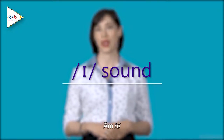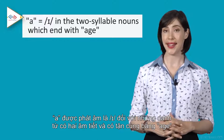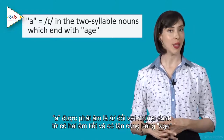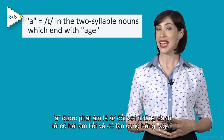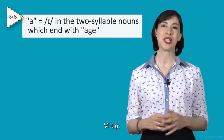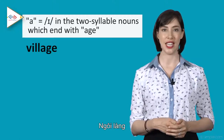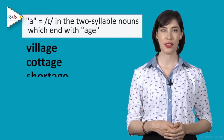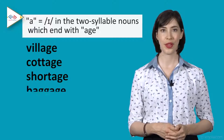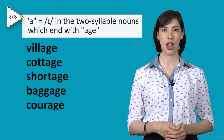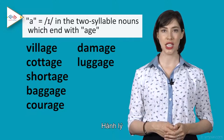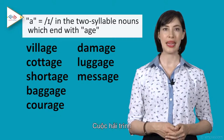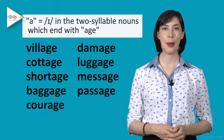The short E sound. Number one: the letter E is pronounced as a short E when it's in a two-syllable noun which ends with E. For example: village, cottage, shortage, baggage, courage, damage, luggage, message, passage.